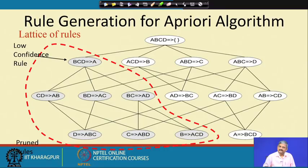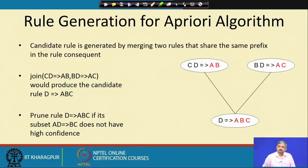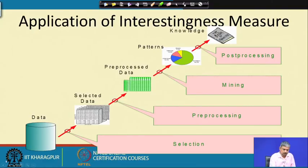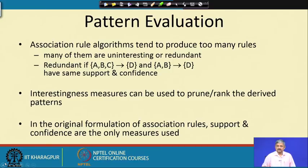In other words, you can prune the lattice. This gives a principle for obtaining the rules: we can join valid rules if their right-hand sides have the same prefix. For example, if C, D → A, B and B, D → A, and B, D → A, C are valid rules, we can join them by moving the common element from one side to the other to produce higher-confidence rules. This is how you obtain the rules.